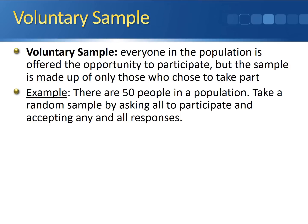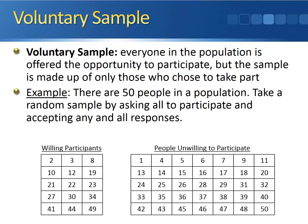In this case, everyone gets the email or everyone gets the phone call. We can divide up the people into willing participants and people who are unwilling to participate. Our willing participants are people 2, 3, 8, 10, 12, 19, 21, 22, 23, 27, 30, 34, 41, 44, and 49. The other 35 people are the people who are unwilling to participate. So all of the willing participants, they fill out the survey, they send in their answers, and we consider those 15 people our sample.